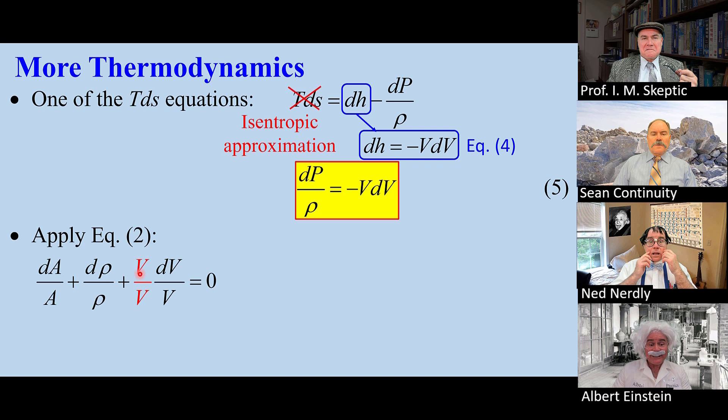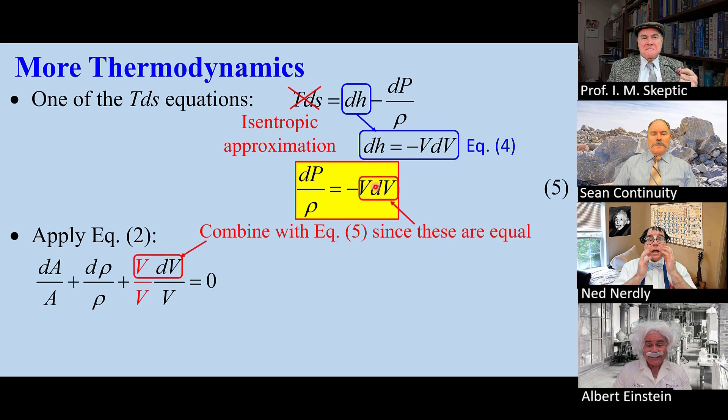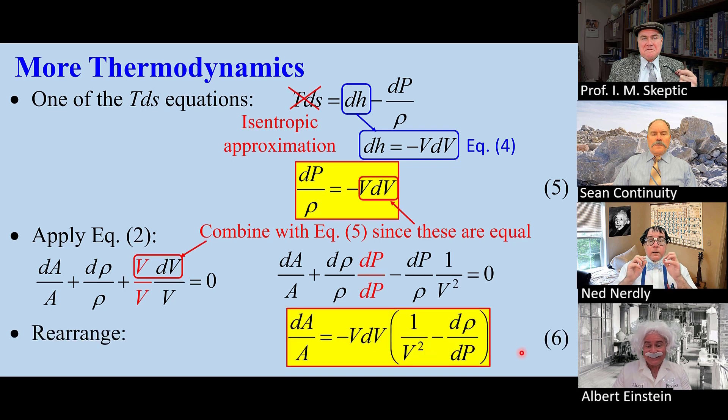Now apply equation two. Multiply and divide by V so that these terms can be combined to get this equation. Multiply and divide by dP, and we get equation six.